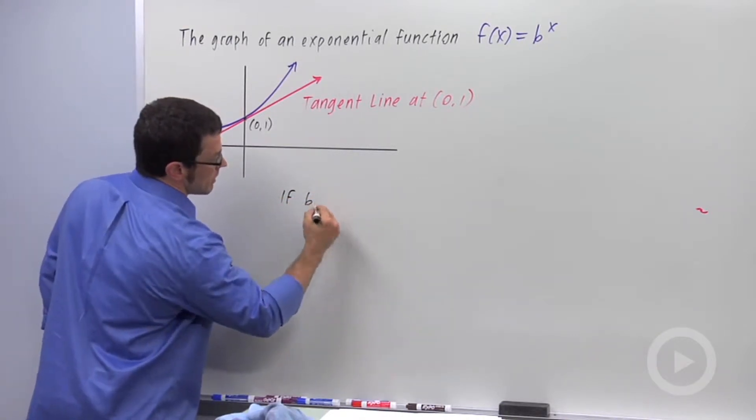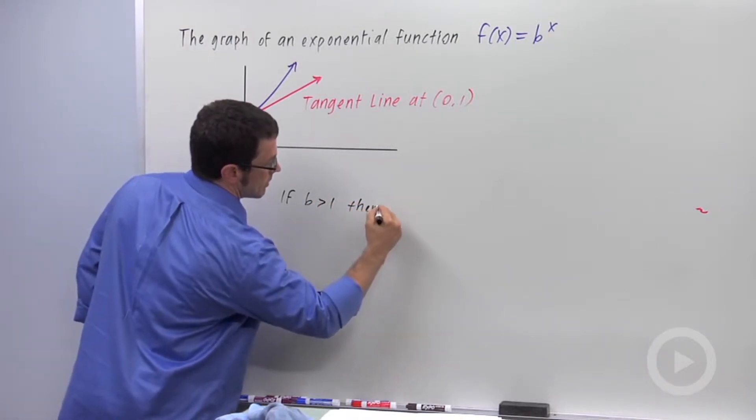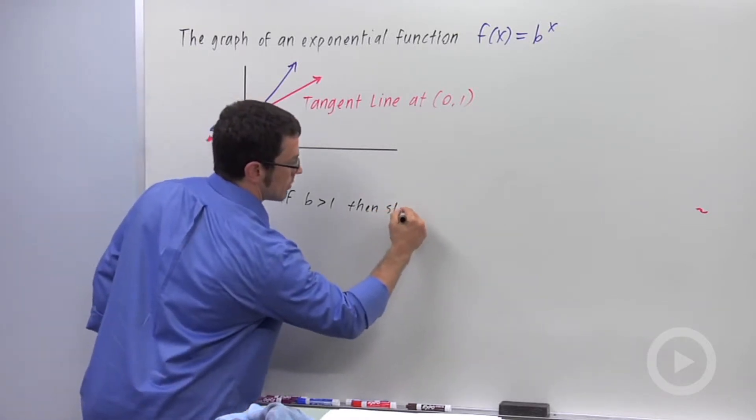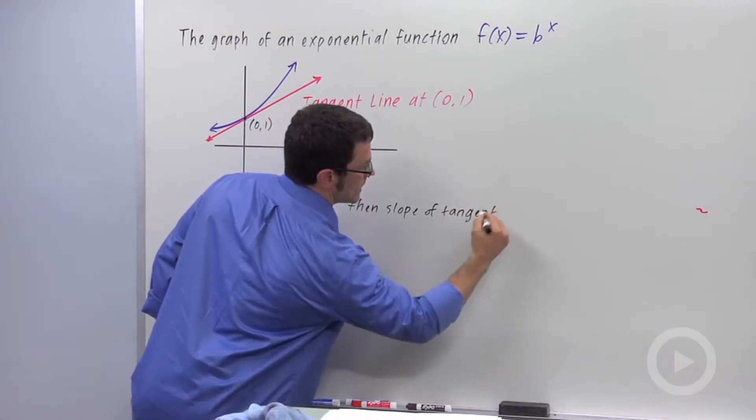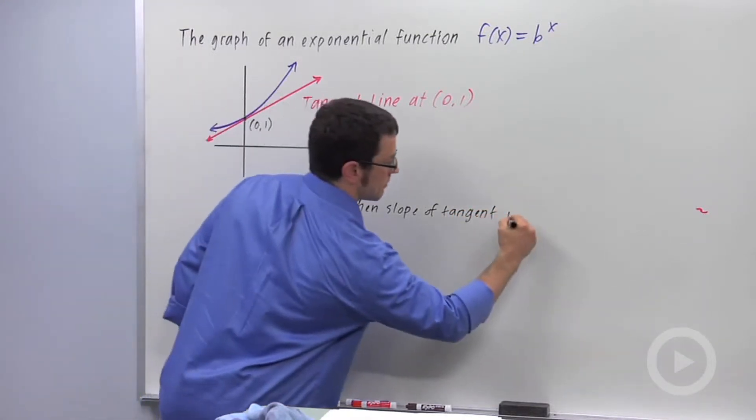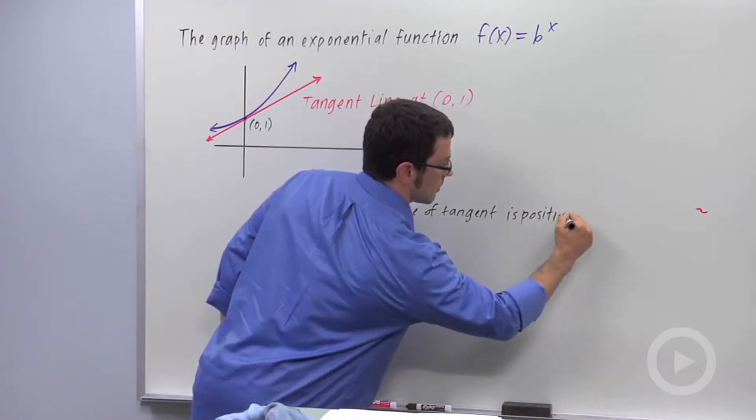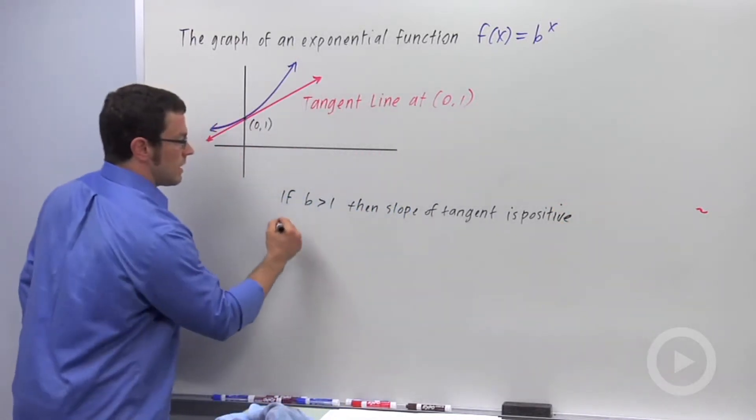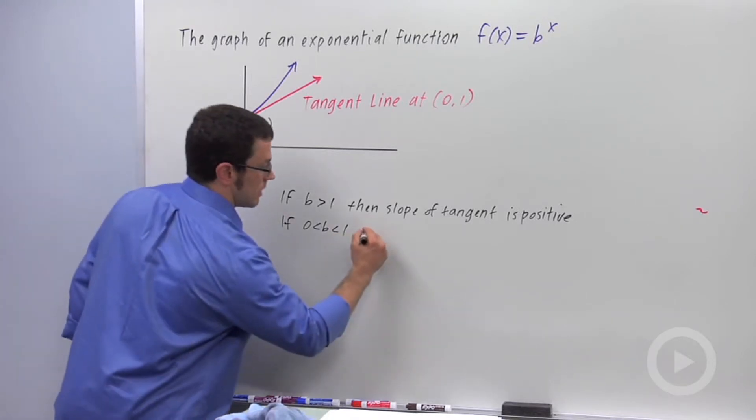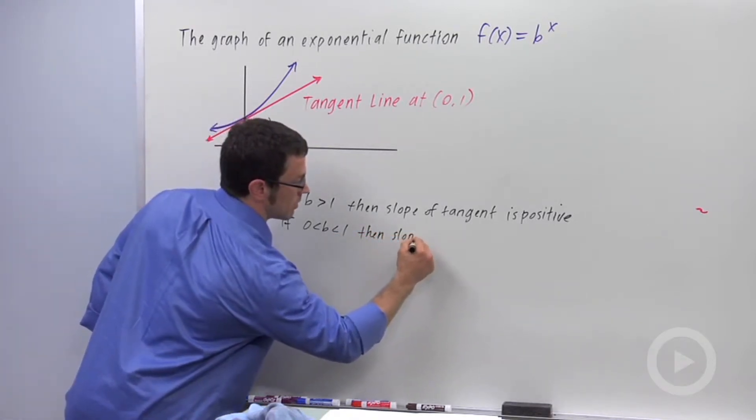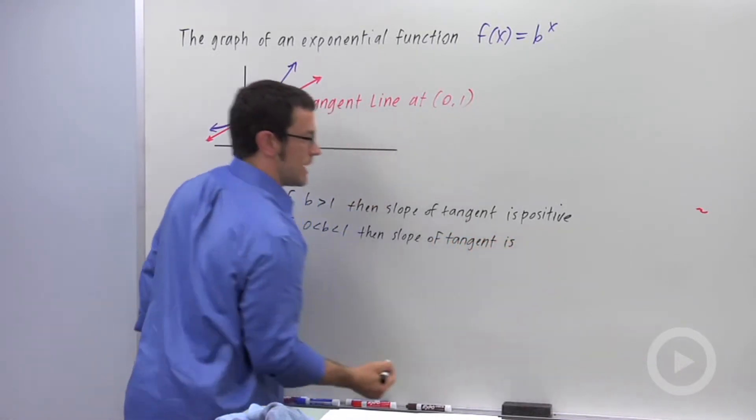If b is greater than 1, then the slope of the tangent line is positive. If b is between 0 and 1, then the slope of the tangent is negative.